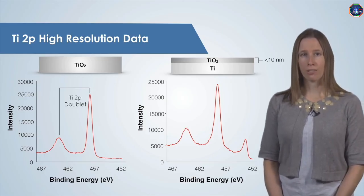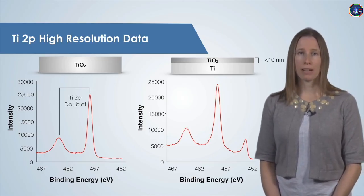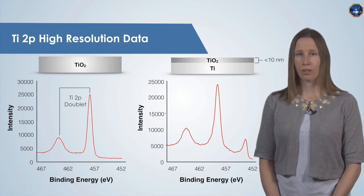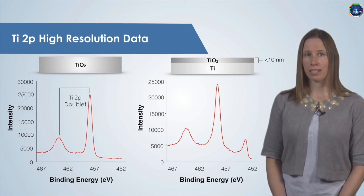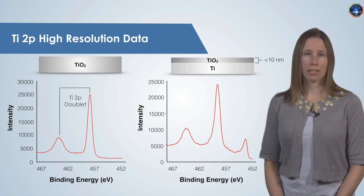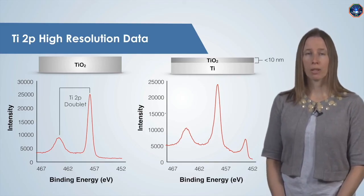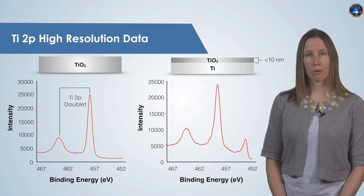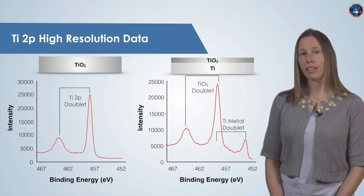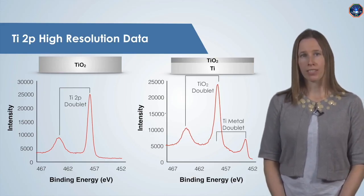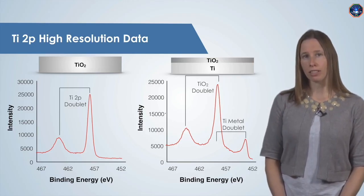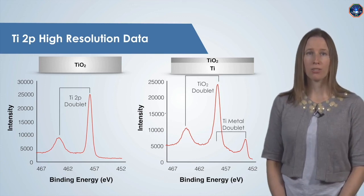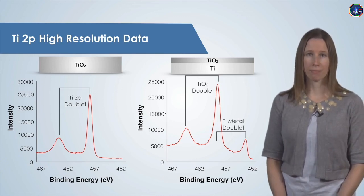Remember, the depth of analysis for XPS is only about 10 nanometers, so if the TiO2 is less than 10 nanometers thick, we may be able to see some signal from the metal below it. In this case, we observe another peak at a much lower binding energy. This extra peak is part of a second titanium 2p doublet that partially overlaps with the TiO2 doublet and is due to elemental titanium.